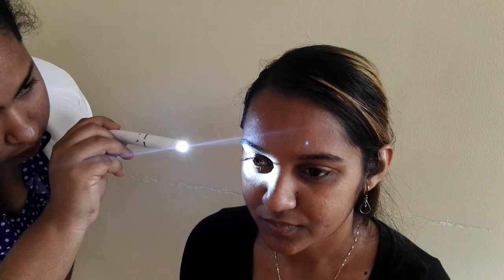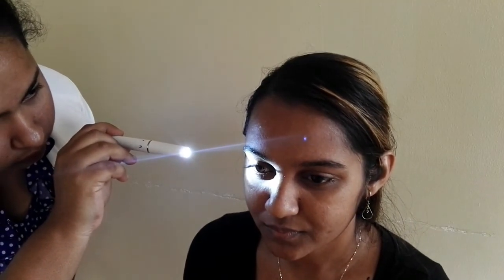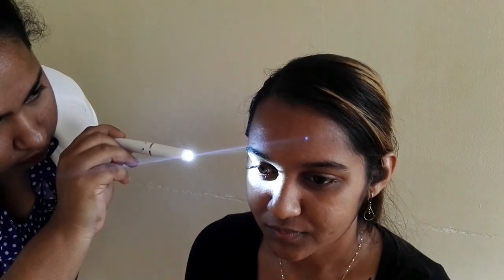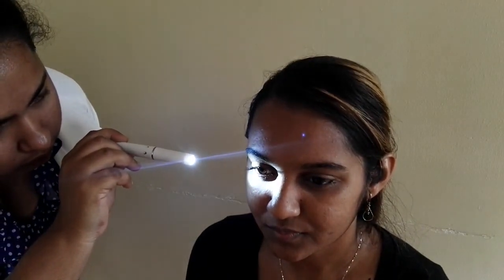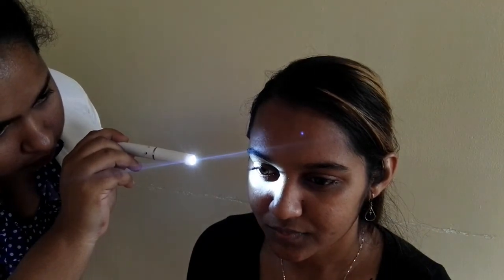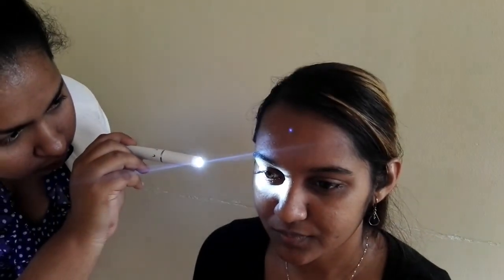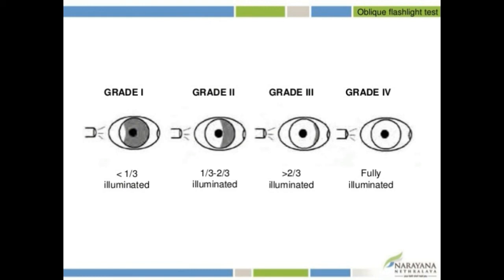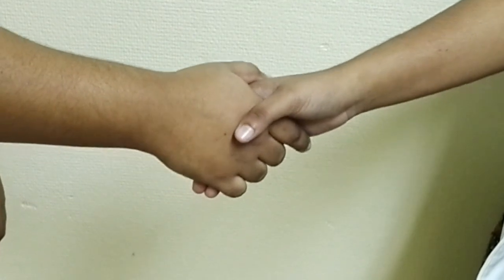The pen torch lies in the same plane as the eye. In the case of a deep anterior chamber, the iris lies flat and the whole iris will be illuminated. In the case of a very shallow anterior chamber, the iris lies forward, blocking some of the light, and very little of the iris is illuminated.